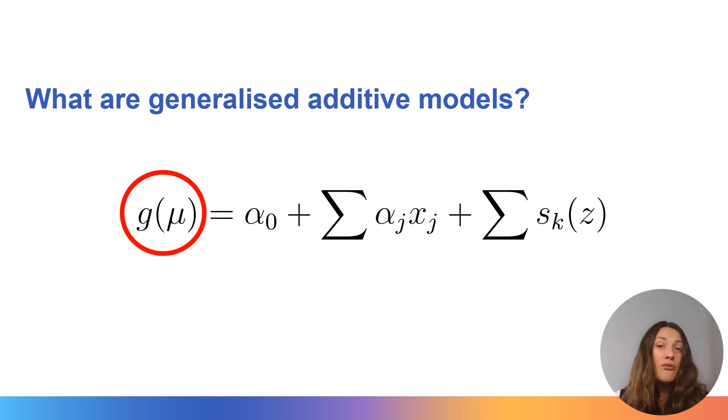For example, if we're using a normal model then this link function would just be the identity function so the left hand side would simply be mu, whereas if we chose to use a Poisson model then this link function would be the log function.